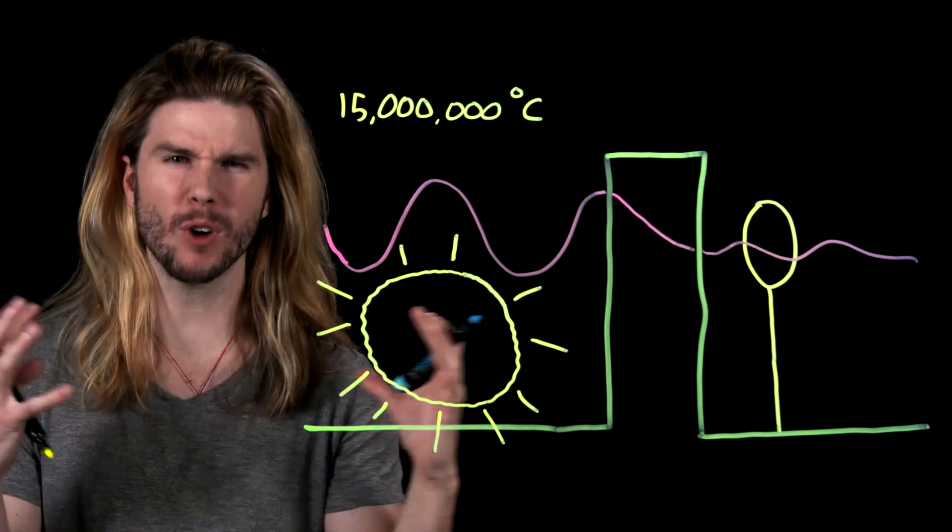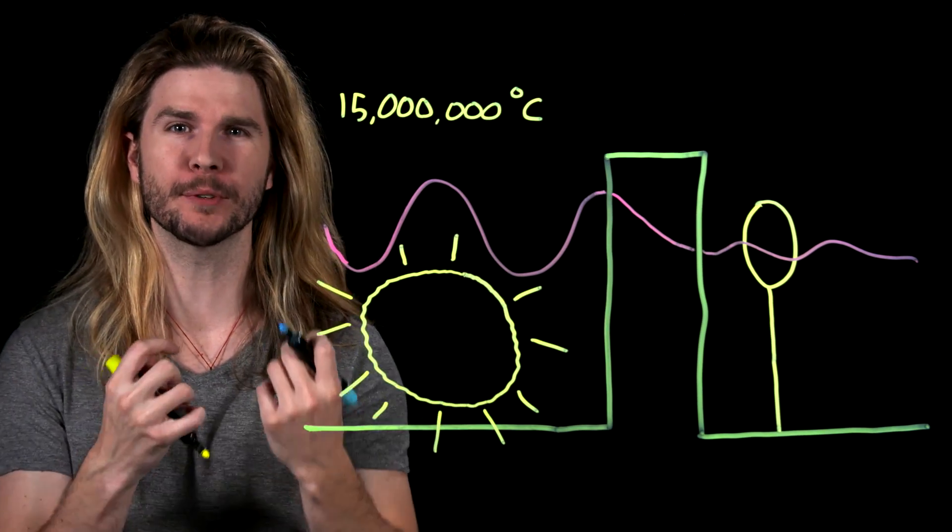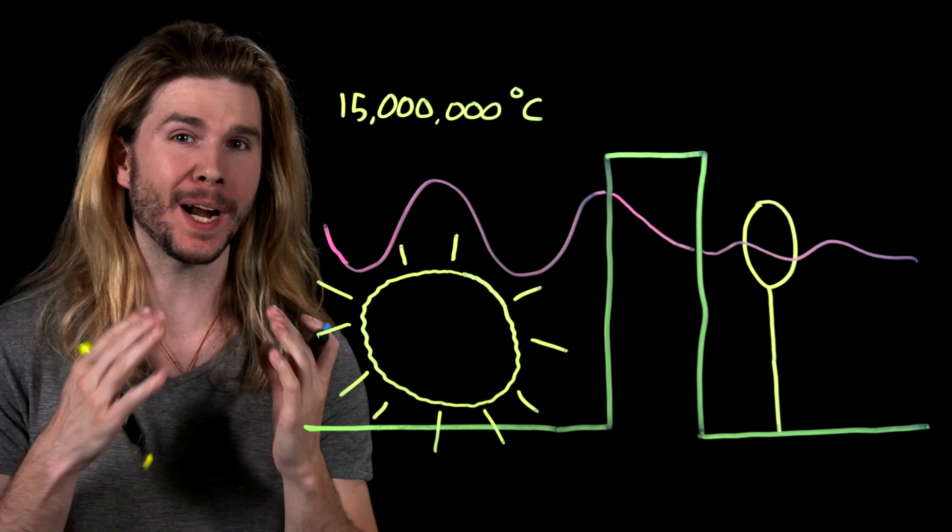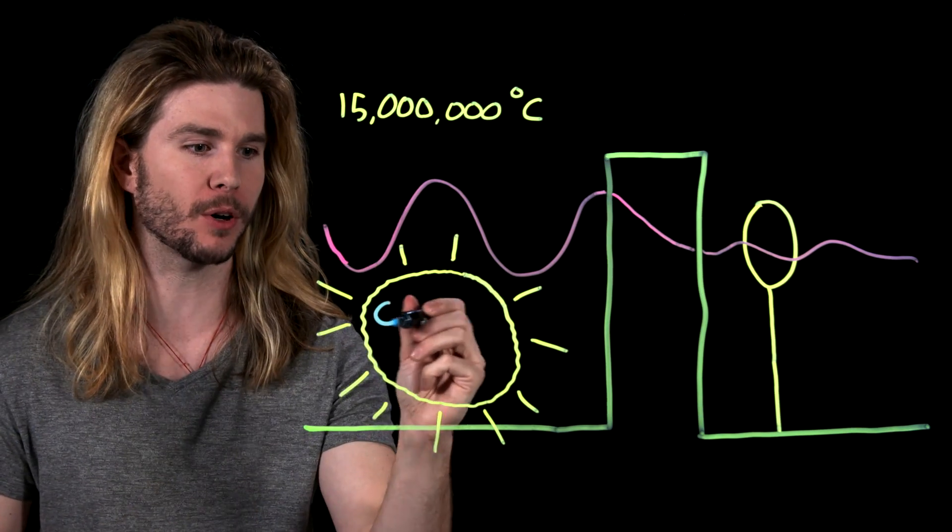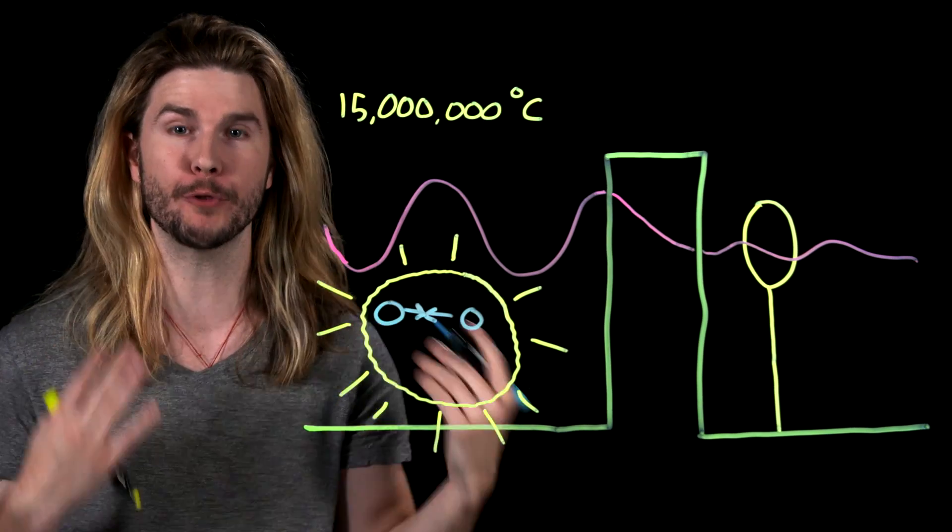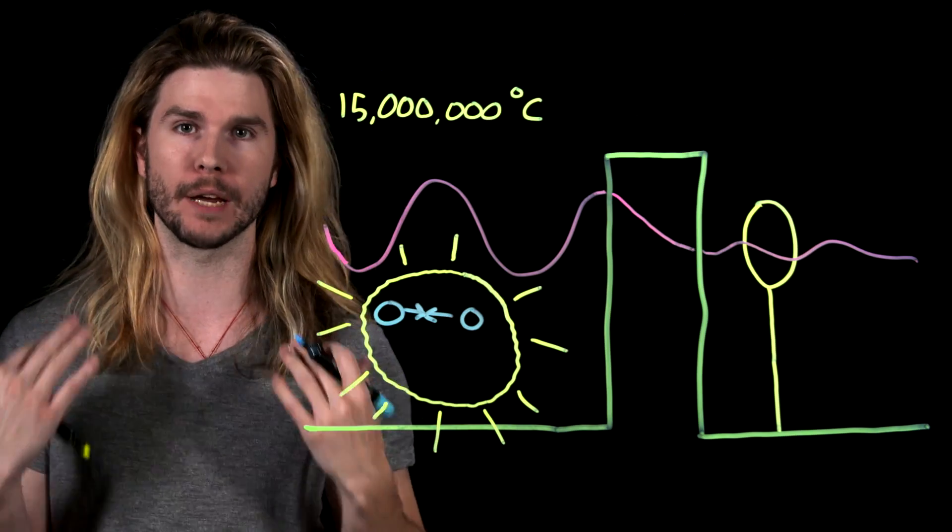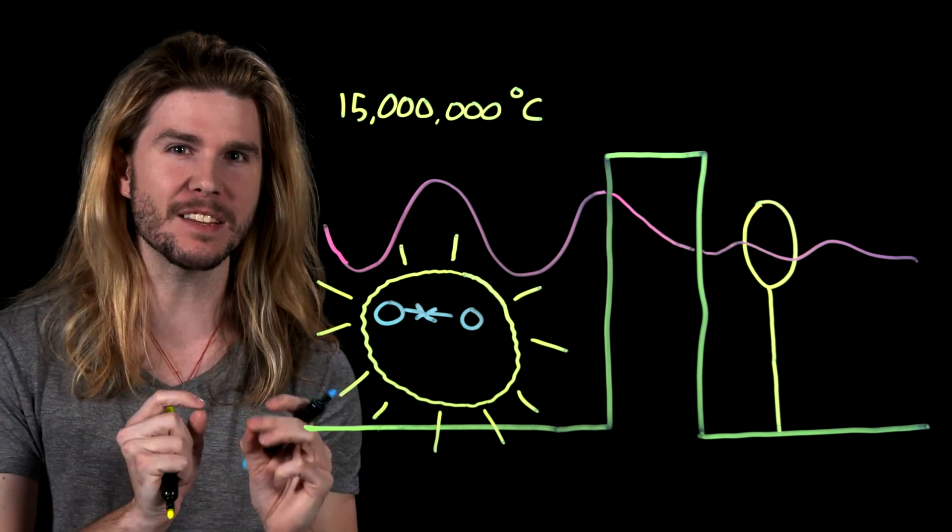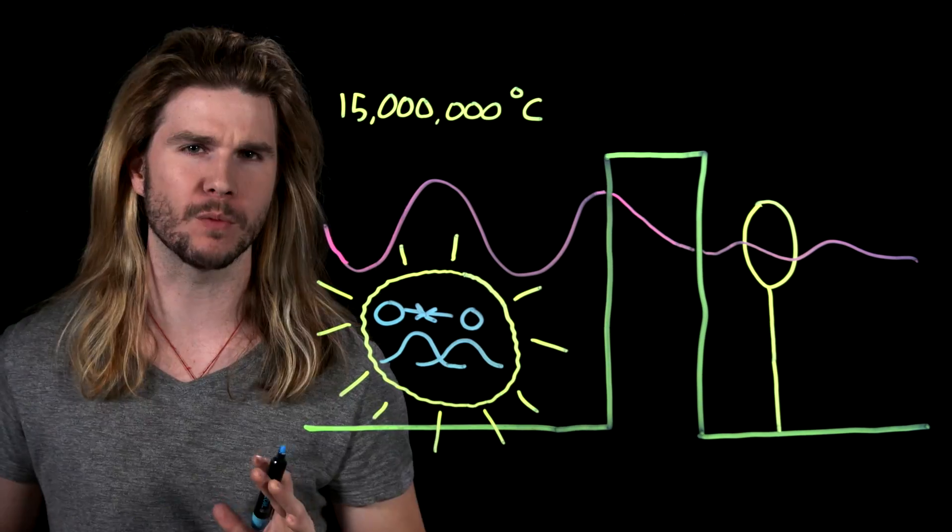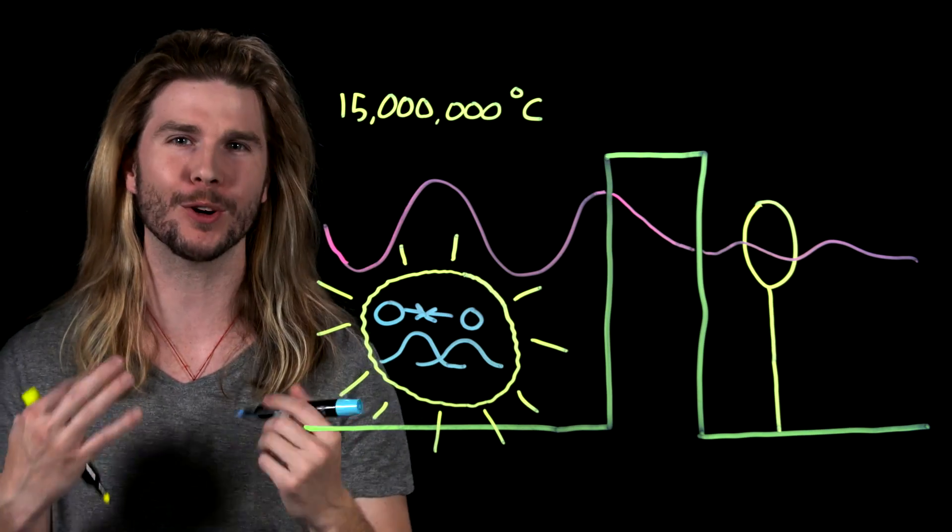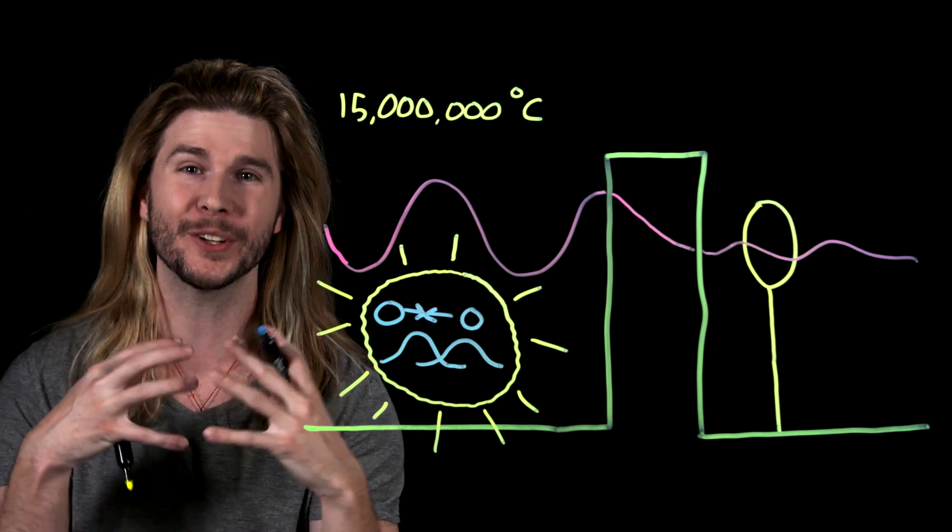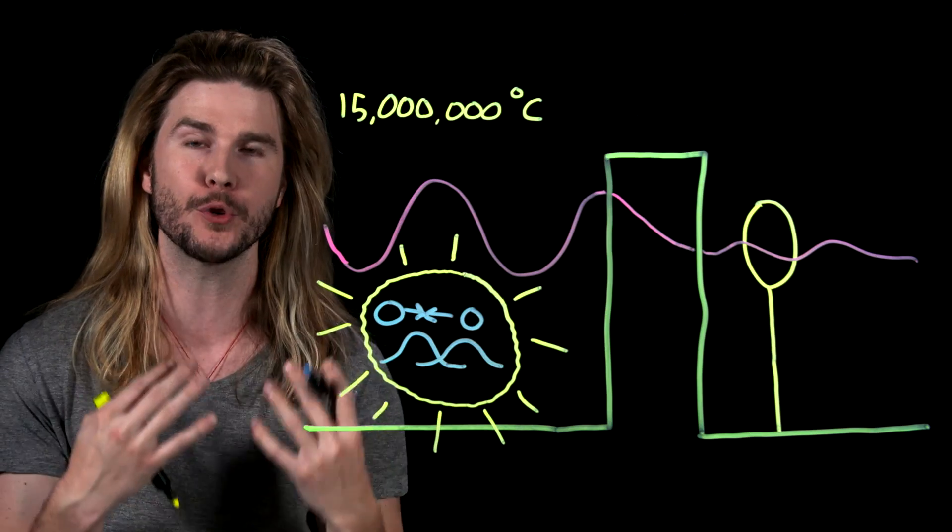I know this all sounds very esoteric, but without quantum tunneling, you and I probably wouldn't exist. The core of our sun, compressed by gravity and fueled by the breath of the early universe, has a temperature of 15 million degrees Celsius. You might think that this temperature is what causes particles inside the sun to get close enough to fuse and undergo nuclear fusion and thereby create the heat and light that helped create life on Earth.